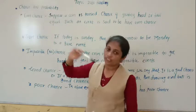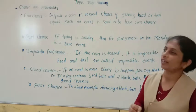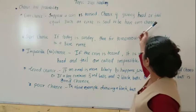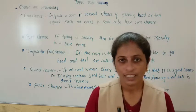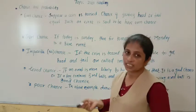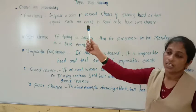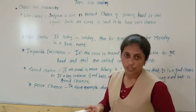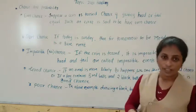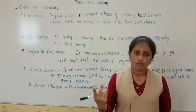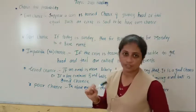Next is even chance. When a coin is tossed, the chance of getting a head or tail is equal — one time you will get head and one time you will get tail. Such an event is called an even chance. When we toss a coin, the chance of getting a head or getting a tail is equal. So such an example is an even chance.